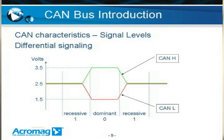By using the dominant and recessive states, if two nodes were transmitting simultaneously and one node attempted to put the recessive state on the bus while the other put the dominant state, the dominant state would be visible to all nodes and would overwrite the recessive. This is the mechanism used in CAN bus to arbitrate between two transmitters. The transmitter sending the dominant state wins the arbitration, while the other must back off and wait for another available time to transmit.